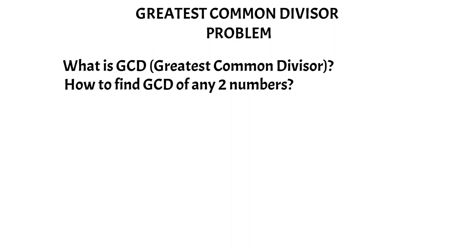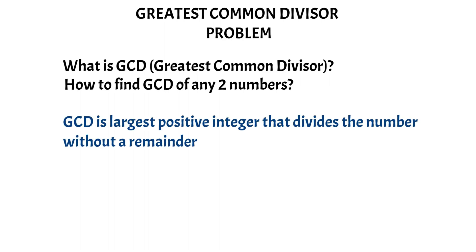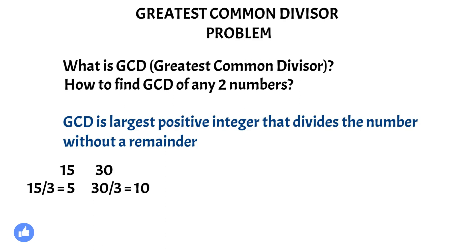So first of all, what is a greatest common divisor? A simple definition of GCD or greatest common divisor is that GCD is the largest positive integer that divides the number without a remainder. For example, the greatest common divisor between 15 and 30 — 3 can divide 15 and 30: 15 divided by 3 is 5 and 30 divided by 3 is 10. But is that the greatest common divisor? No.